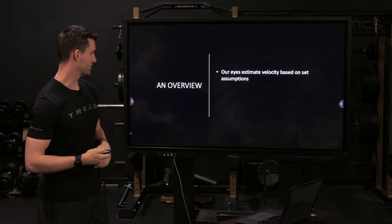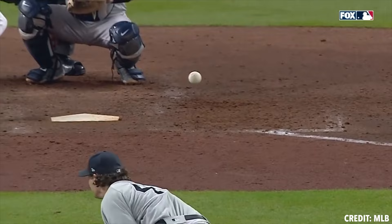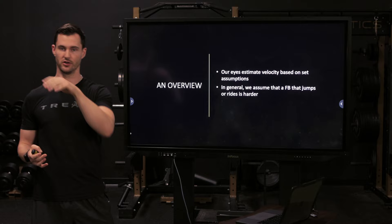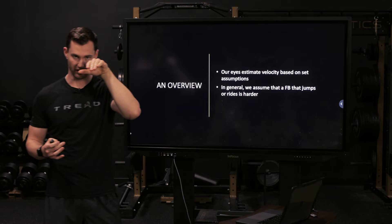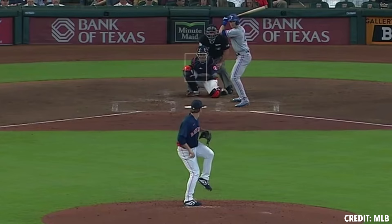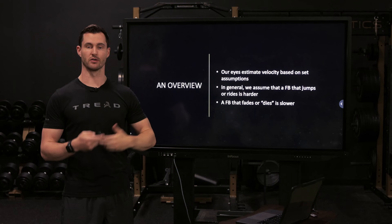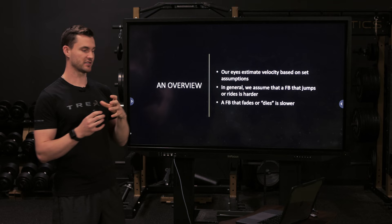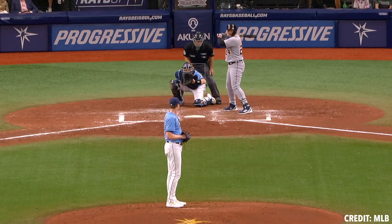So an overview: our eyes are approximating velocity based on a number of set assumptions. In general, we assume that a fastball with late ride, that late jumping effect, or late carry where it explodes on the hitter at the last second — we assume those pitches are going to be faster. Because in general they are: a 70 mph fastball fizzles out while a 100 mph fastball explodes, so we associate that riding and carry with high velocity. A fastball that fades or has a little sink at the end we associate with a slower pitch.